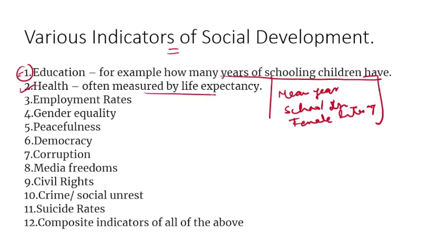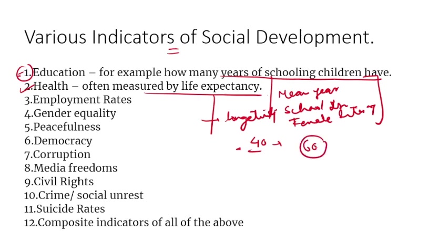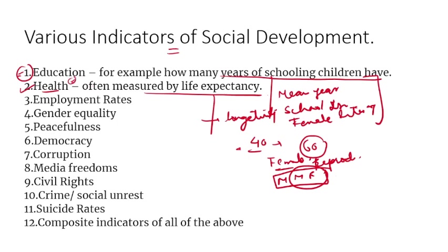Health is often measured by life expectancy — also called longevity — such as chances of living past age 40 or 60. This includes female perspectives like reproduction and maternal mortality rates. Employment and unemployment rates are also key indicators. For gender equality, we have the Gender Gap Development Report and the Gender Development Index, which measures gender equality and inequality in your country.